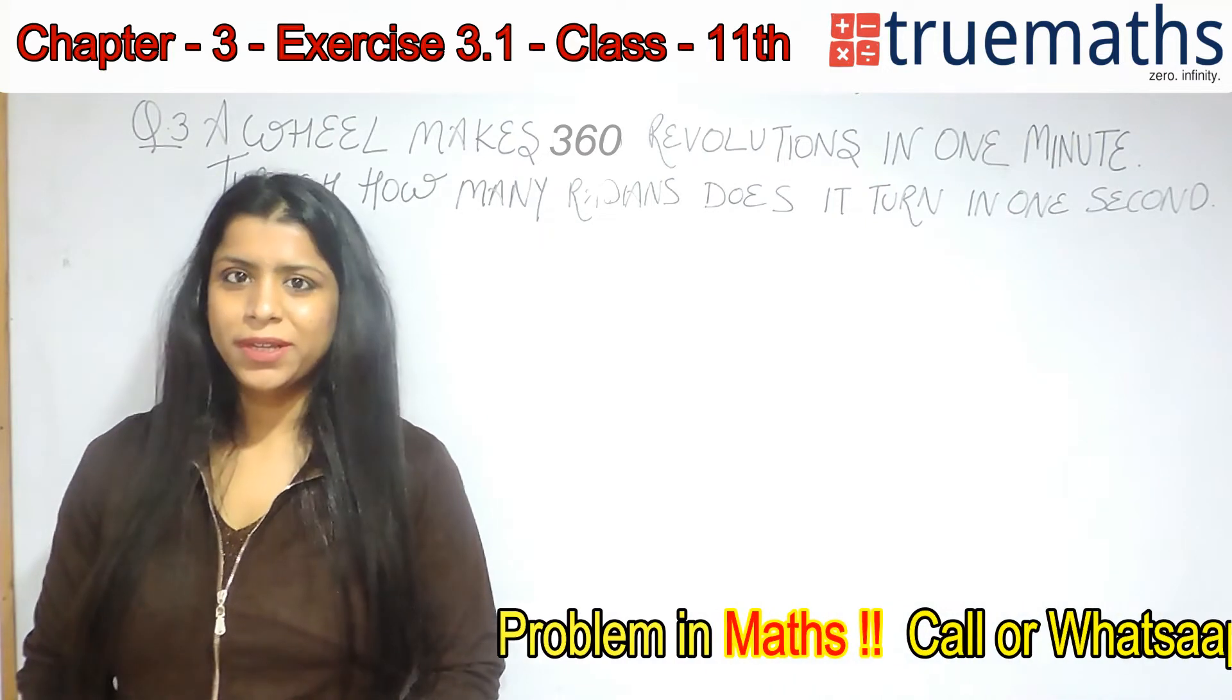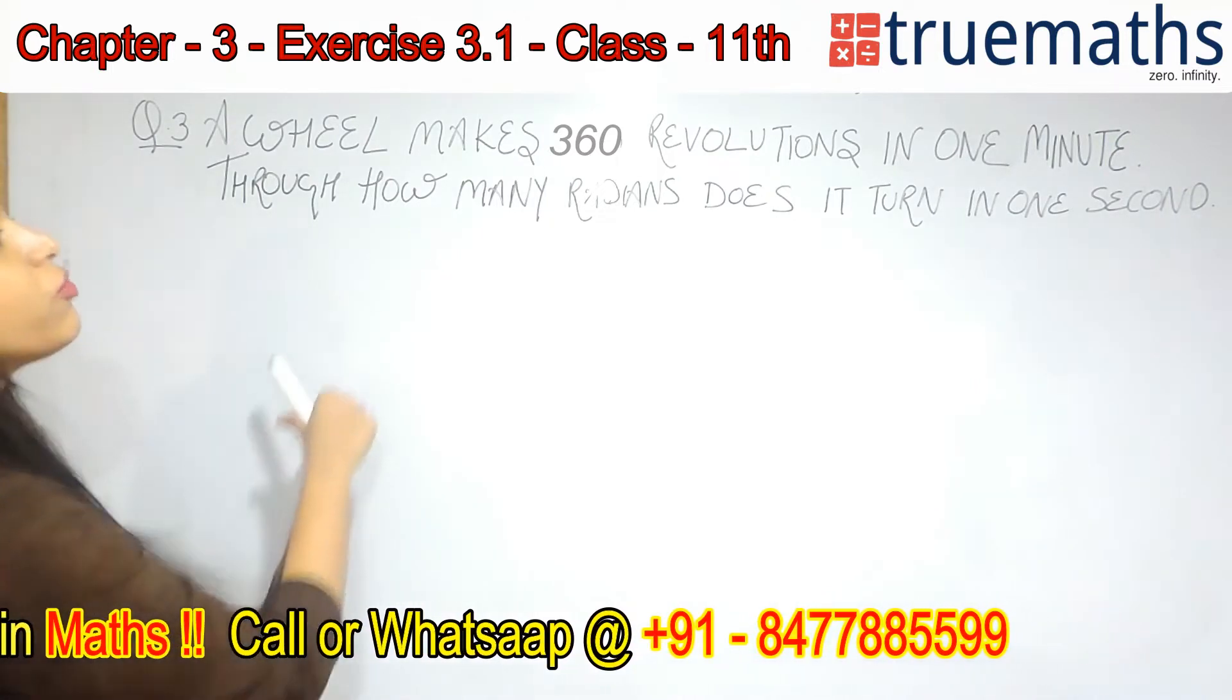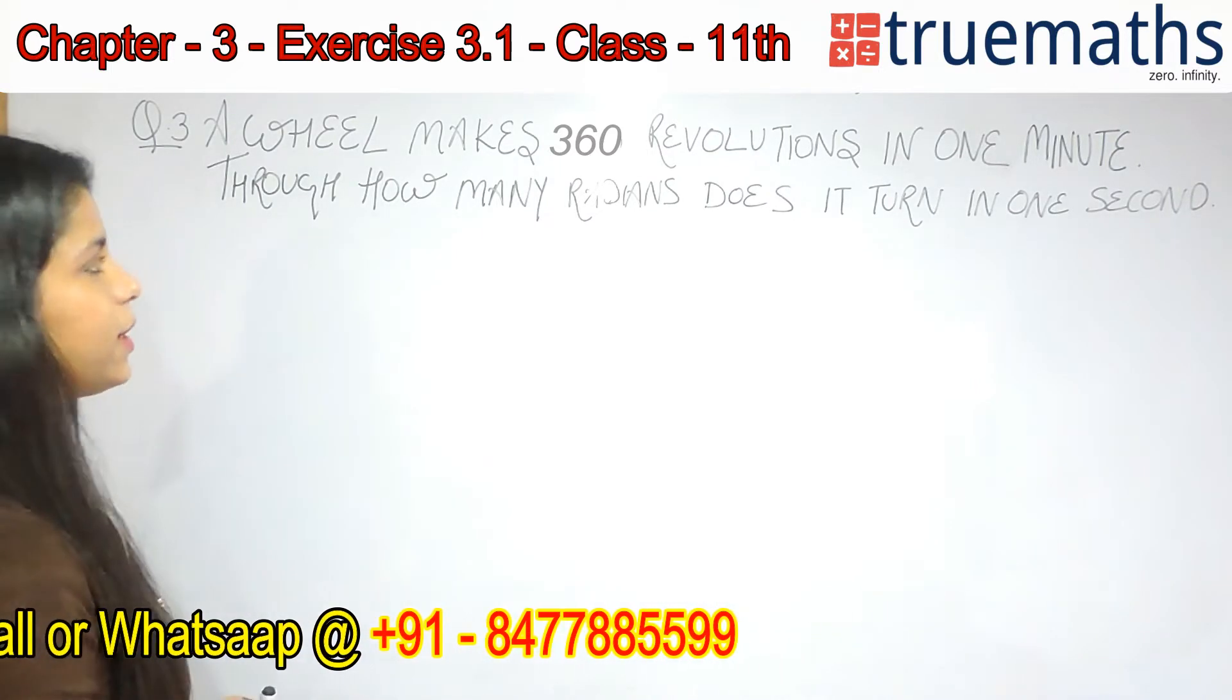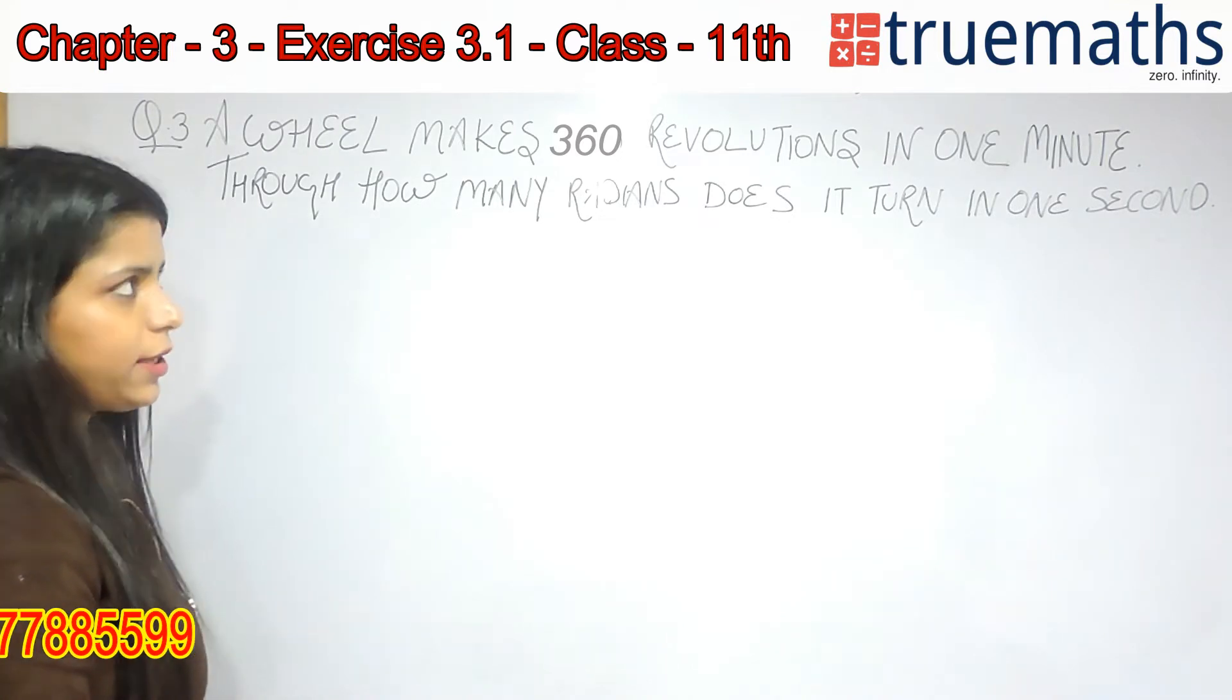So let's begin. The question says, a wheel makes 360 revolutions in 1 minute. Through how many radians does it turn in 1 second?